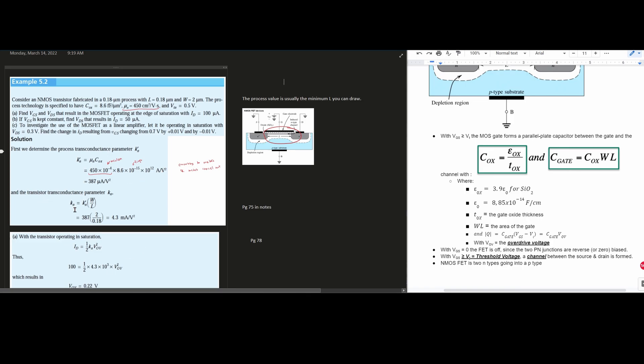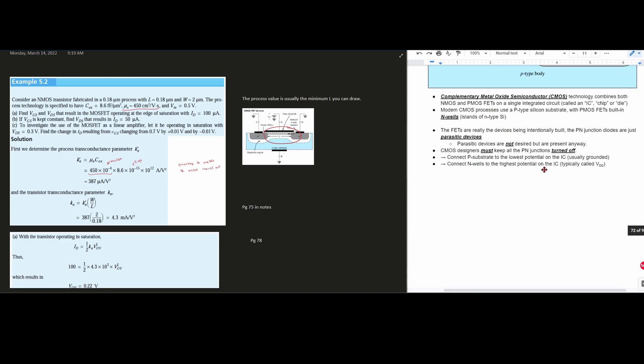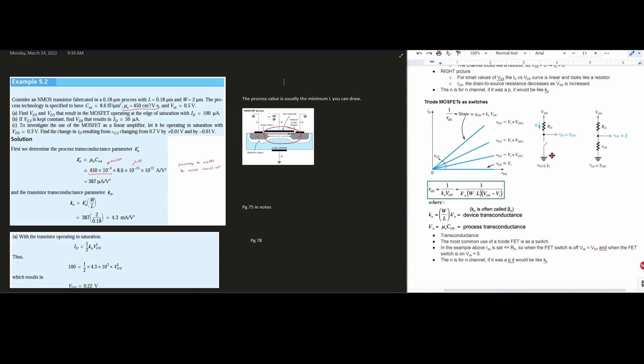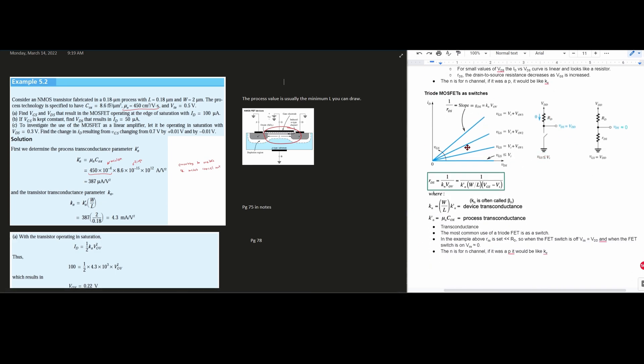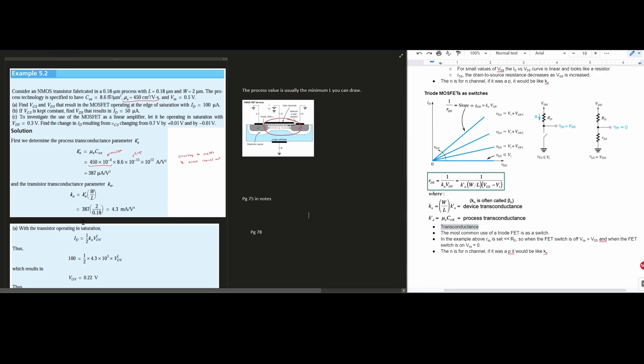So now we're going to have the transistor transconductance parameter KN. To find this, we would set our KN equal to the K' N, so what we previously found or were given, and then this is W over L. The equation for this and more about it is going to be on page 75 in the notes linked below the like button. And it's going to be right here. So this is for triode MOSFET switches. Specifically looking for is the device transconductance. So we're going to plug in our values. So we can see our W is 2 micrometers, so we're plugging in 2, and then our L is going to be 0.18 micrometers. The micrometers are going to cancel out, and then we just have a 387 out front. So if we plug all this into your calculator, we do some math, we're going to get 4.3 milliamps divided by volts squared.